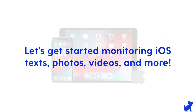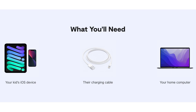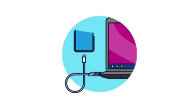In the meantime, let's get started in setting up text message, photo, and video monitoring for your child's iOS devices. For the first time setup, you will need your child's iOS device, a Windows or Mac computer, and a charging cable for your child's iOS device. You'll be using this cable to plug the device into the computer for the first time setup.